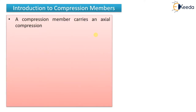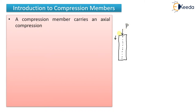What is a compression member? Simply, we can define a compression member as that member which carries an axial compression. For example, let me draw a diagram here. Let us assume that this is a column, and it is carrying one load P. Because of this external load, the column will get shortened — the length of this column will decrease. This type of load is known as compressive load, which tends to decrease the length of a member. So any member which is subjected to compressive forces is simply called a compression member.